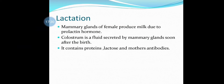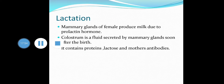Lactation: mammary glands of the female produce milk due to the prolactin hormone. Colostrum is a fluid secreted by the mammary glands soon after birth. Colostrum is very important because it contains protein, lactose, and mother's antibodies to fight against pathogens or diseases. Because of this colostrum, newborn babies develop immunity power or resistance power.